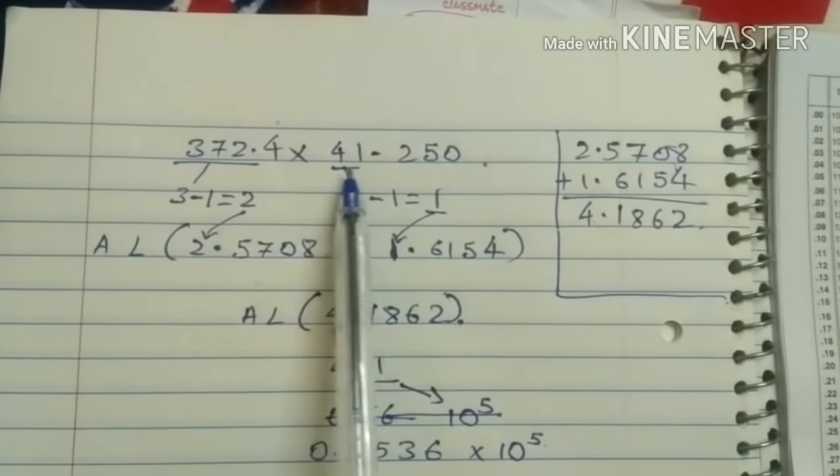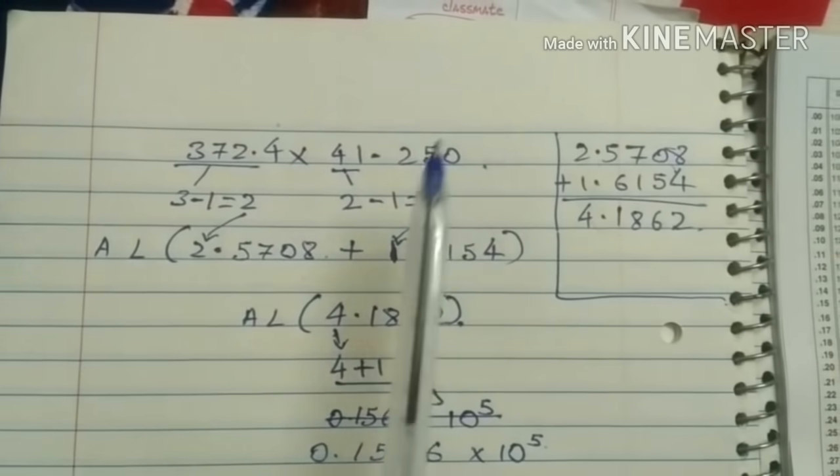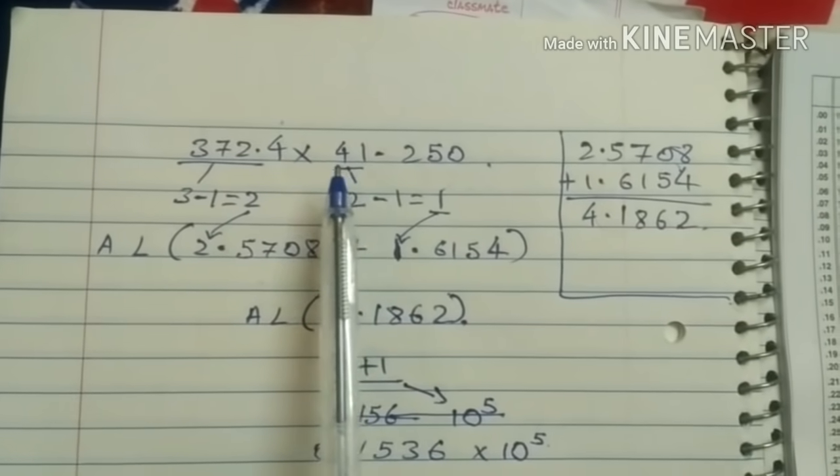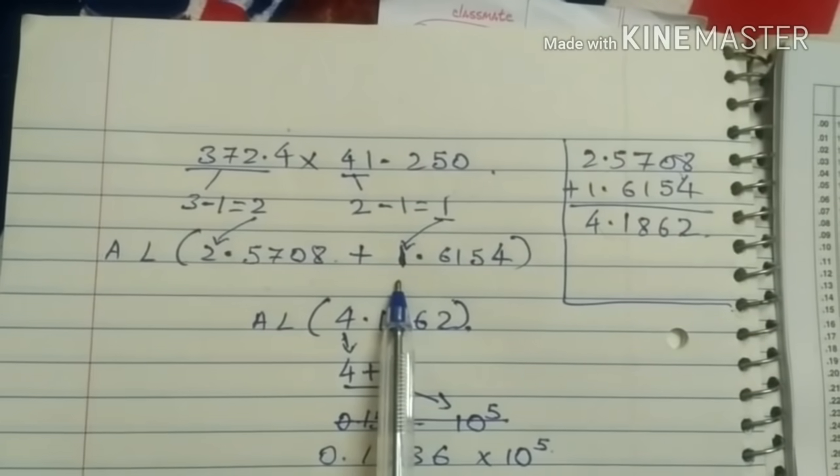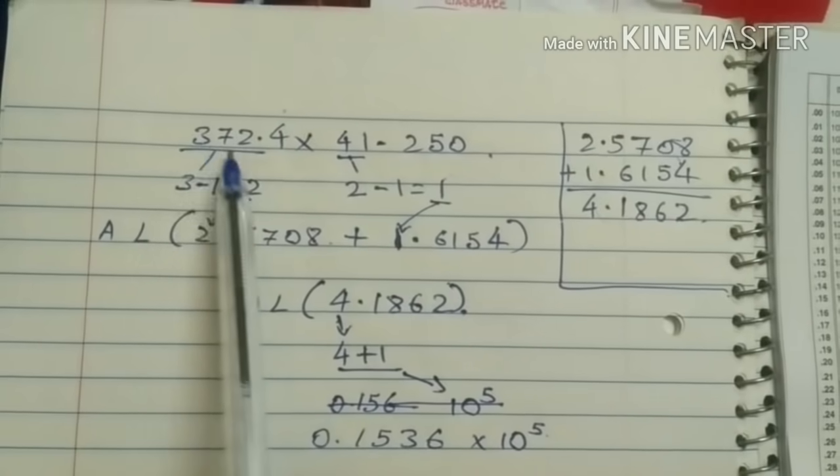Again same thing for the second number 41.250. We will eliminate 0. And what is, how much number is before decimal here? 4, 1, 2 number, 2 minus 1, 1. Again we have to write it here. Okay, now we will use log table for finding log of this.